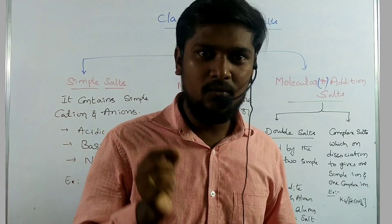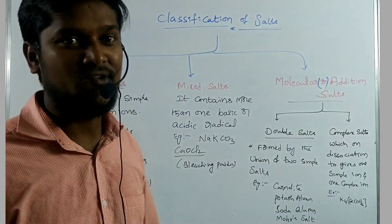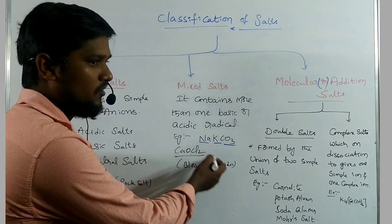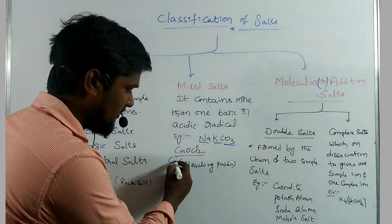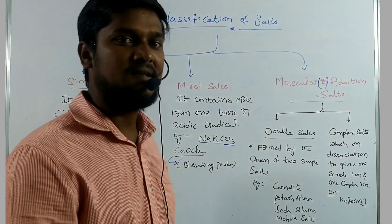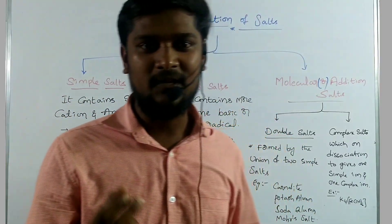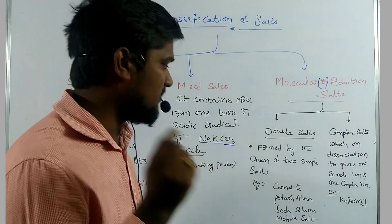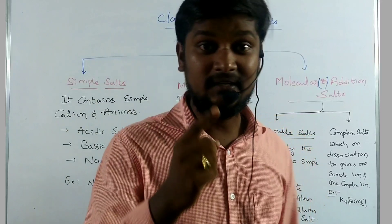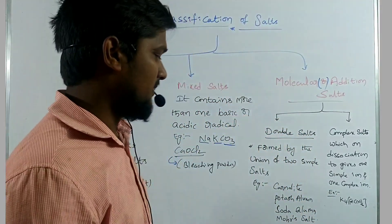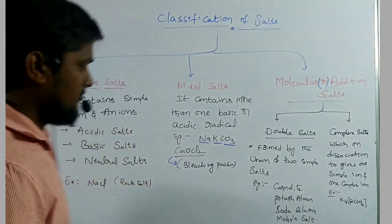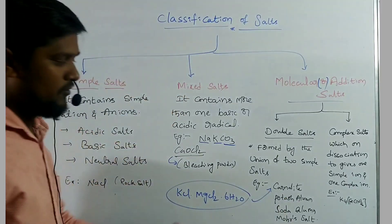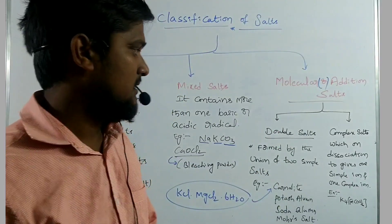The second type is mixed salt. It contains more than one acidic or basic radical and is called a mixed salt. The best examples are sodium potassium carbonate and calcium oxy chloride — we know that calcium oxy chloride is bleaching powder. The third type is molecular or addition salt, which is further classified into two types: double salt and complex salt. A double salt is formed by the union of two simple salts. The best examples are carnallite, potash alum, and soda alum. Carnallite is KCl·MgCl₂·6H₂O.